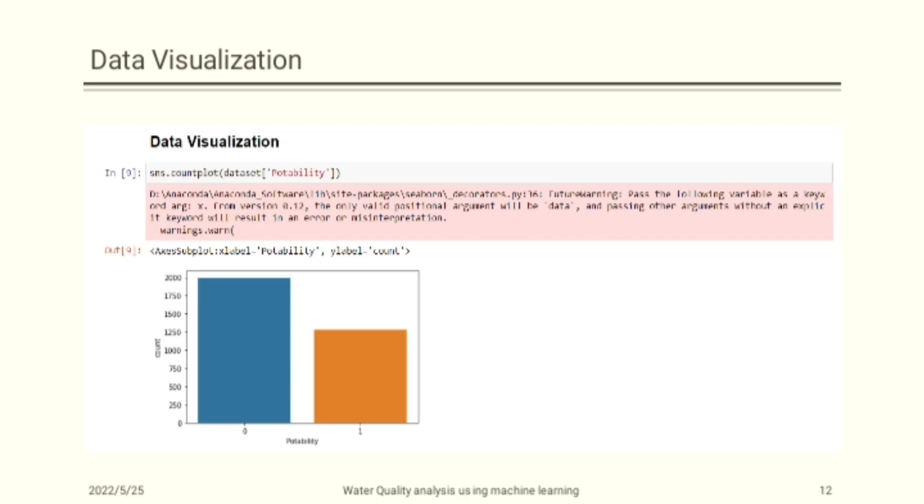Visualize the count of portability column using countplot of Seaborn library. Then check the value count of our target feature portability. Then visualize the portability using a countplot function of Seaborn. Then visualize the pH value using a displot function to check that it contains a normal distribution or not. Then visualize all the features using histogram. Visualize the correlation of all the features using a heatmap function of Seaborn library. And last, see the outliers using the box plot function.